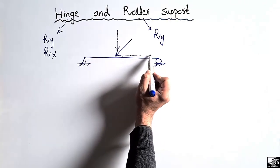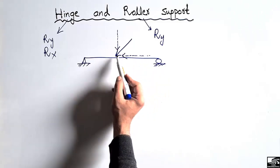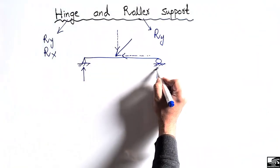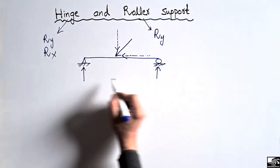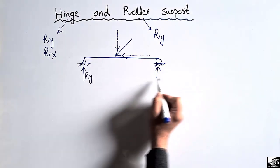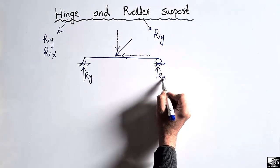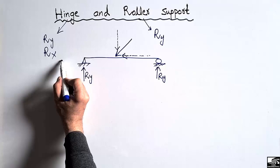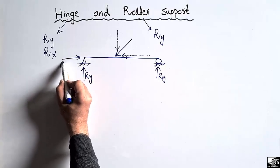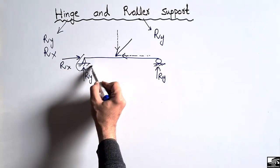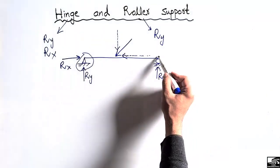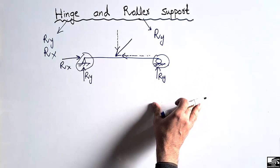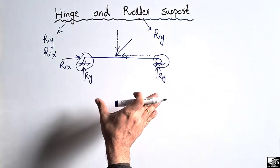So the vertical component will be divided between these two supports — half the load will be taken by this support and half by this support. So there will be a vertical reaction from both supports. But this horizontal load will only be resisted by this support, Rx, because this is a hinge support, while this is a roller support, and the roller support cannot take any horizontal load. So this was the basic concept of the hinge and roller support.